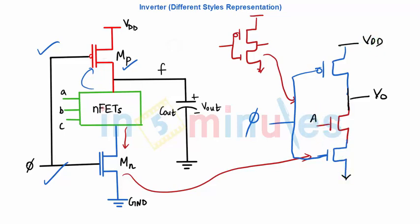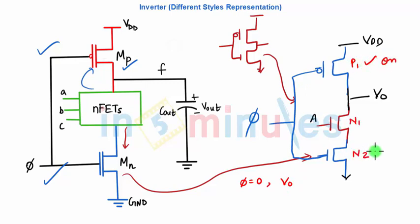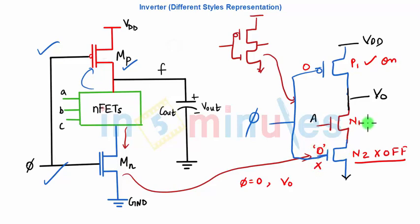Let's see how this works. When phi is equal to zero, my output V-out: phi equals zero means the P1 header transistor is on. At that point, N2 the footer transistor is off, so there is no path to ground. The same phi going to the footer means it turns on only when one is applied, but currently it's zero, so it's off. Any change on A will not be reflected because there is no direct path to ground.